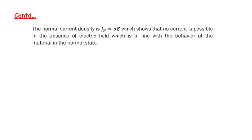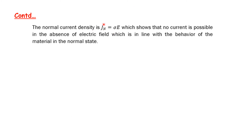The normal current density Jn = σE, which shows that no current is possible in the absence of an electric field. This is in line with the behavior of material in the normal state.